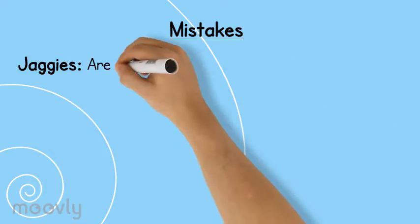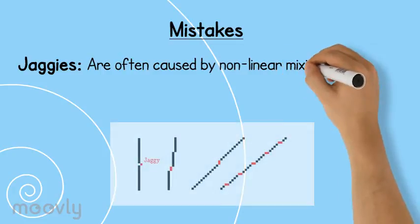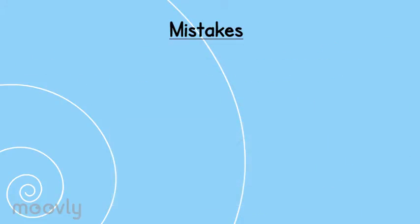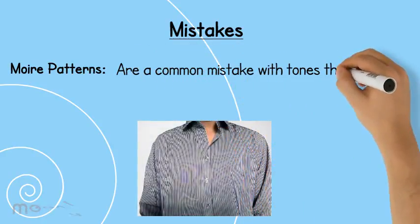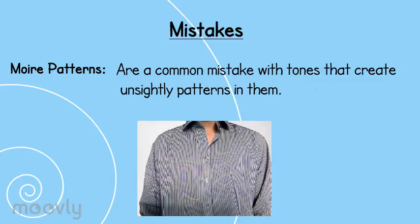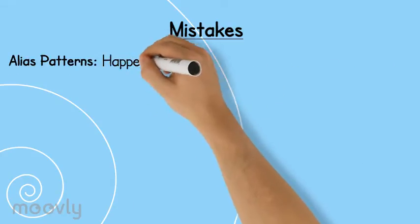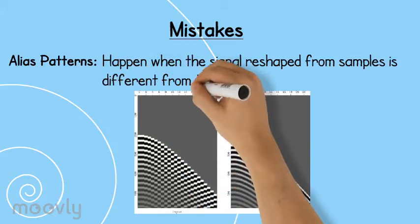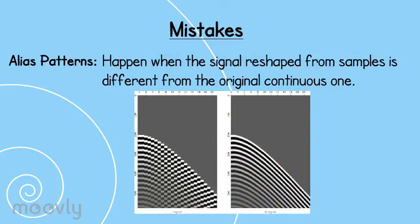Mistakes of image processing. Jaggies are often caused by non-linear mixing effects producing high-frequency components. Moiré patterns are a common mistake with tones that create unsightly patterns in them. Aliasing patterns happen when the signal reshaped from the sample is different from the original continuous one.